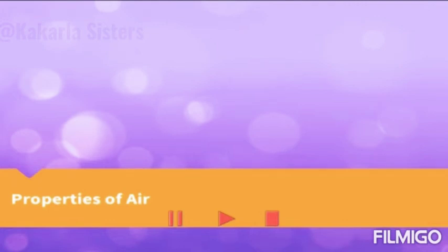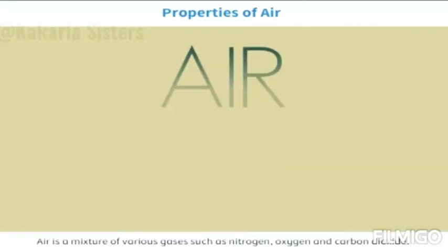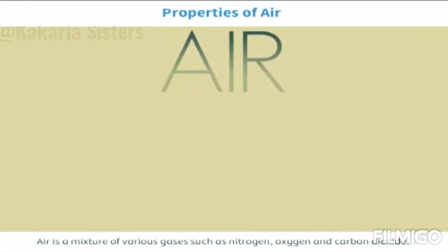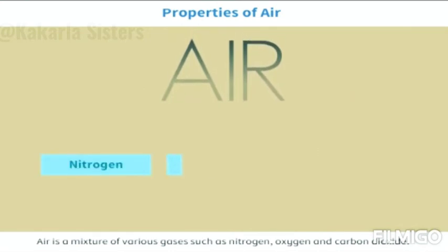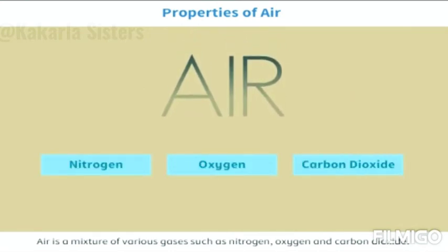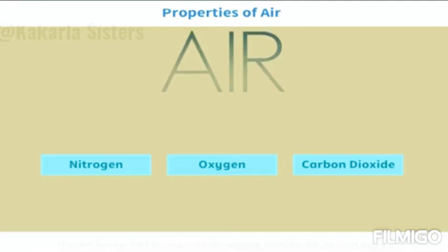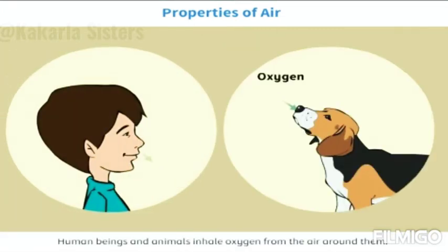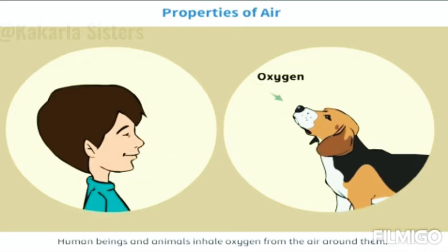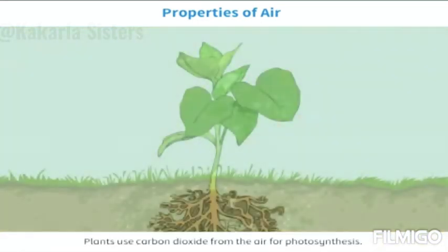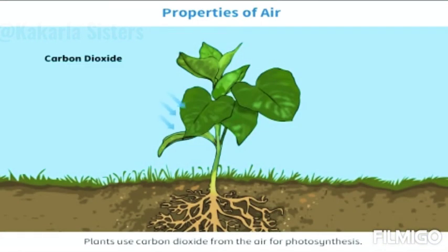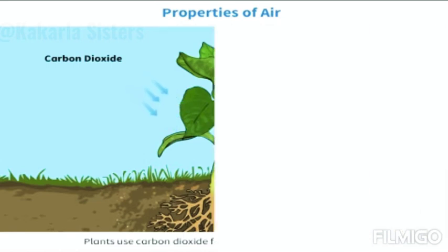Properties of air. Air is a mixture of various gases such as nitrogen, oxygen and carbon dioxide. Human beings and animals inhale oxygen from the air around them. Plants use carbon dioxide from the air for photosynthesis.